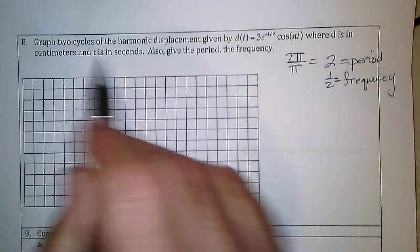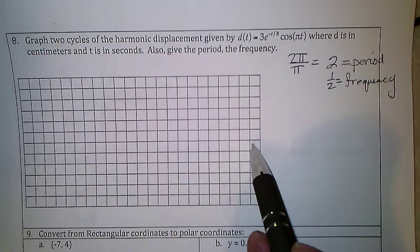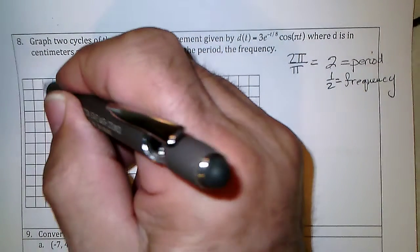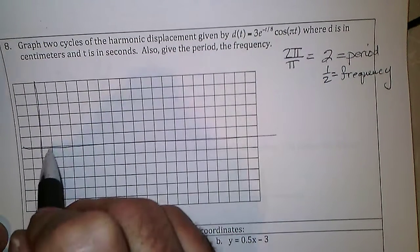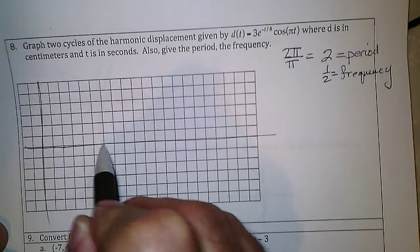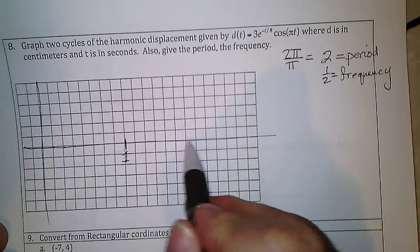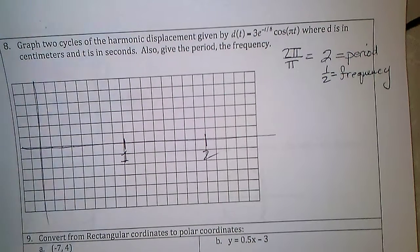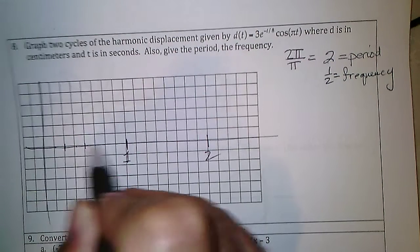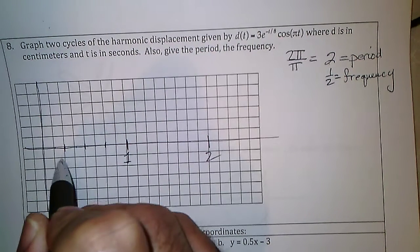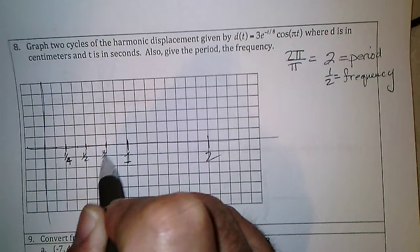Since t is in seconds and the period is 2, we want two cycles, so we need to go at least to t = 4. Starting at 0, I'll label 1, 2, 3, 4, 5, 6, 7, 8 grid marks and call that 2 on the time axis. That gives a nice spacing where I can split into quarter-period marks: 1/4, 1/2, 3/4, and 1 for the first period.